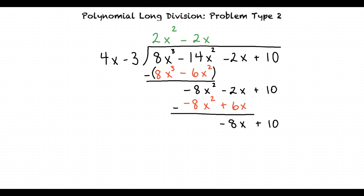Now we divide the leading term of the bottom expression by the leading term of the divisor and get negative 8x divided by 4x which equals negative 2. Negative 2 times 4x minus 3 equals negative 8x plus 6.